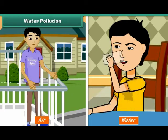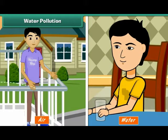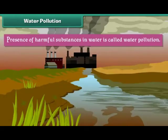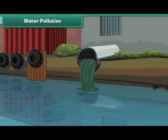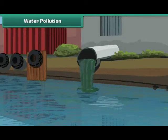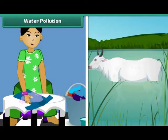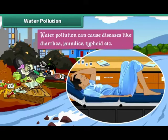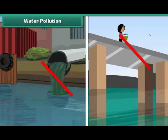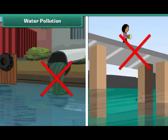Water Pollution. Like air, water is also important for our survival. Presence of harmful substances in water is called water pollution. Domestic and industrial sewage pollute water. Activities such as washing clothes and bathing animals in the rivers also cause water pollution. Water pollution can cause diseases like diarrhea, jaundice, typhoid etc. We can reduce water pollution by preventing disposal of waste into water.